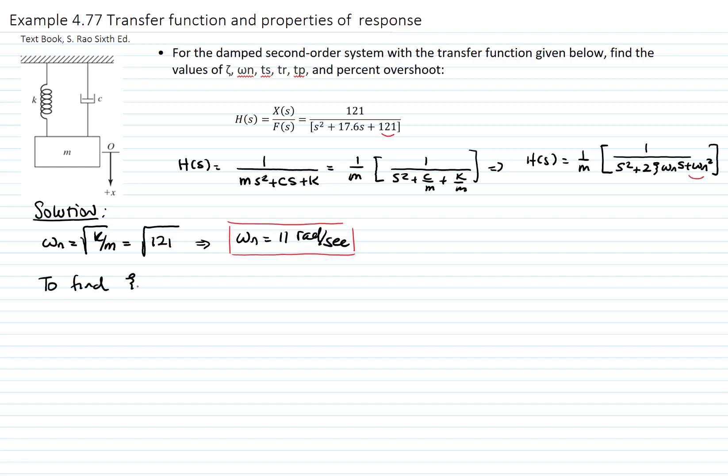To find zeta, we use the middle term, which is 2 zeta omega n, and that equals 17.6. And I solve for zeta, which will be 17.6 divided by 2 omega n that I just found. And then I have that zeta is equal to 0.8.